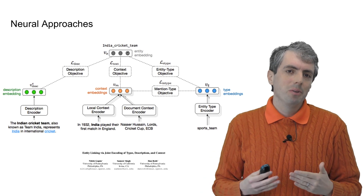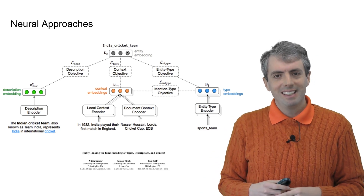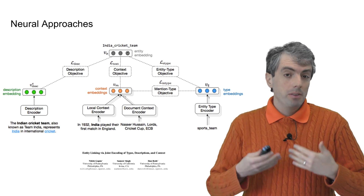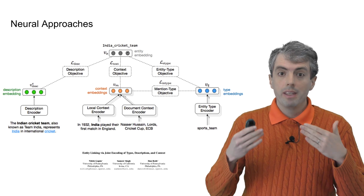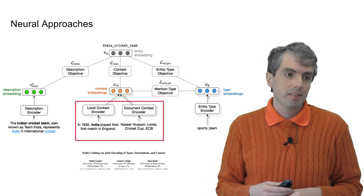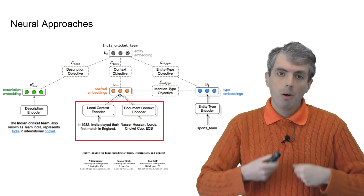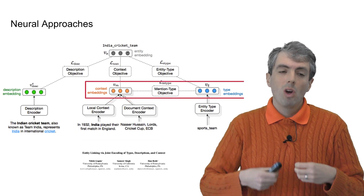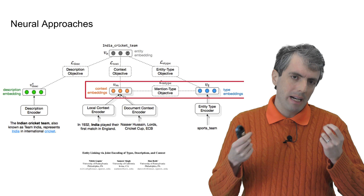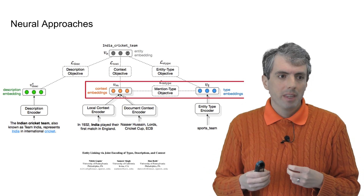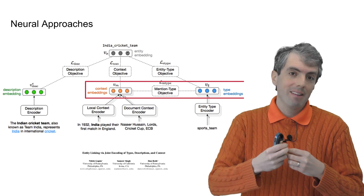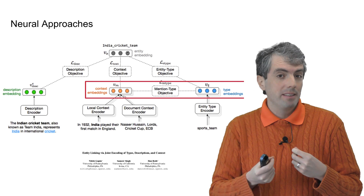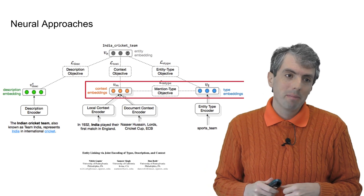Let's talk about how you might do entity linking in a neural model. This is from Gupta et al. First, you need to get representations for the context where candidate entity mentions occur, then encode those in some way. One thing that often turns out to be helpful is to figure out what kind of thing is being talked about. So if you have Kursk, is that talking about a city, a submarine, or a place? You can try to figure out what type it is, and that will help you match it up to the appropriate Wikipedia page.